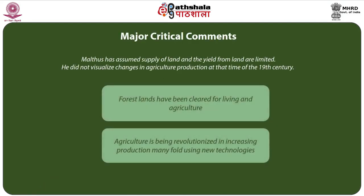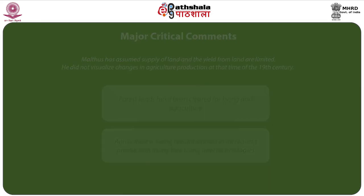One of the major criticisms of the theory is that Malthus assumed the supply of land and the yield from land are limited. He did not visualize changes in agricultural production in the 19th century. For instance, forest lands were cleared for living and agriculture. Agriculture was being revolutionized in increasing production manifold using new technologies like the system of rotation of crops, use of chemical fertilizers, and improvements in plant and animal breeding.